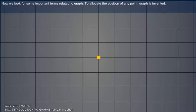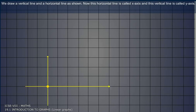Now, we look for some important terms related to graphs. To allocate the position of any point, graph is invented. We draw a vertical line and a horizontal line as shown. Now, this horizontal line is called x-axis and this vertical line is called y-axis.